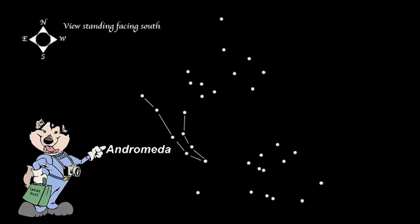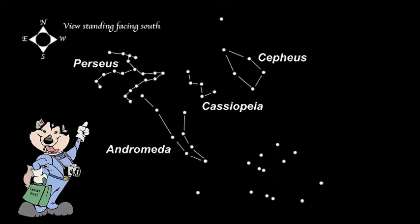Andromeda is in the sky with her family: Cassiopeia, Cepheus, and Perseus. Andromeda is just south of her mother, Cassiopeia.